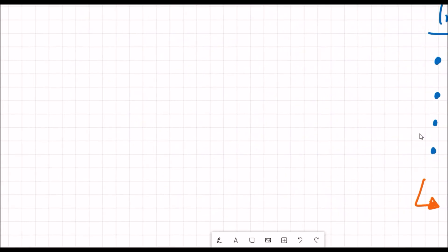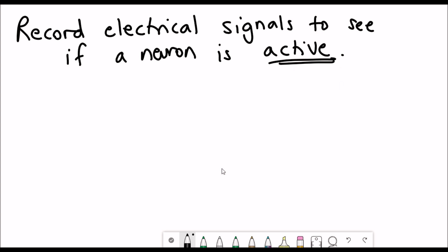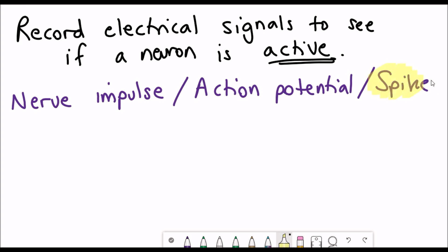Besides these chemical signals when it goes through the neuron itself it has an electrical signal and you can record these electrical signals to see if a neuron is active. These neural signals are often also referred to as nerve impulses or action potentials or spikes due to the trace that they give if you measure the voltage across the membrane of these neurons.